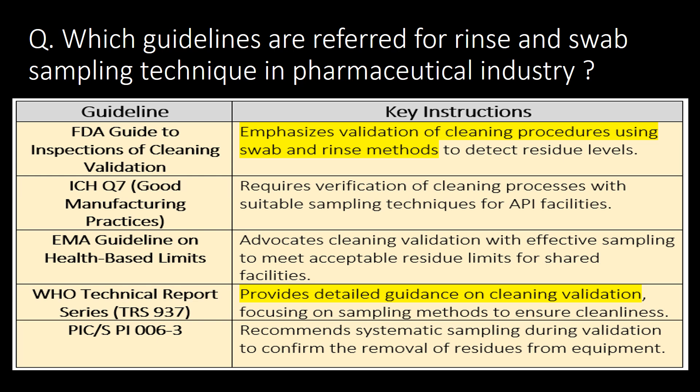The last and very important question: which guidelines are referred to for rinse and swab sampling techniques in the pharmaceutical industry? FDA Guide to Inspections of Cleaning Validation, ICH Q7, Good Manufacturing Practices, EMA Guidelines on Health Based Limits, WHO TRS No. 937, and PIC/S Guidelines 0006-3 are the commonly referred guidelines for rinse and swab sampling techniques in the pharma industry.